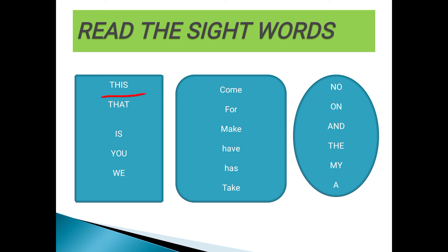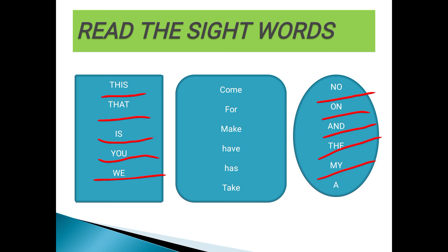First we read sight words. The first sight words are: T-H-I-S — this, T-H-A-T — that, I-S — is, Y-O-U — you, W-E — we, N-O — no, O-N — on, A-N-D — and, T-H-E — the, M-Y — my, and last is 'a'. Till now I know all of you have learned these by heart.